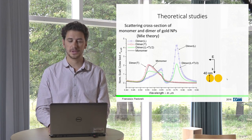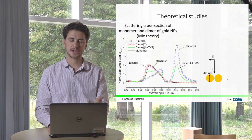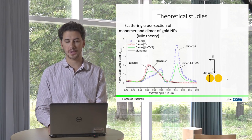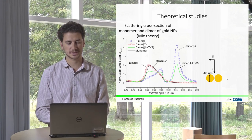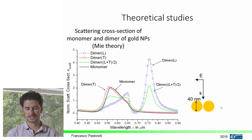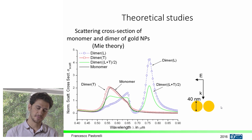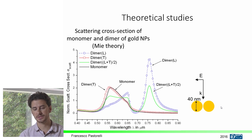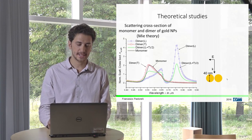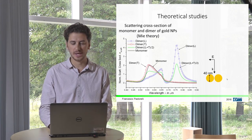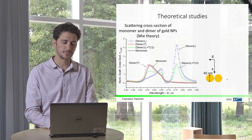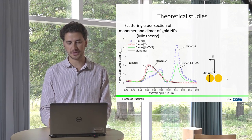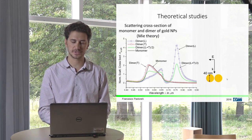After the intuition, we started simulations. Using Mie theory, we analyzed the scattering cross-section of monomers and dimers of gold nanoparticles. We see that monomers — single nanoparticles — react mostly in the green part between 500 and 650 nanometers, while a dimer can scatter light efficiently up to 800 nanometers, covering also the red part of the solar spectrum.